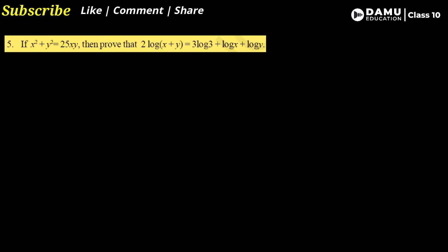Here we need to observe one condition. The left side has 2·log(x + y), which we can write as log(x + y)². On the left side we have x² + y², and we need to add 2xy to both sides in order to get (x + y)².